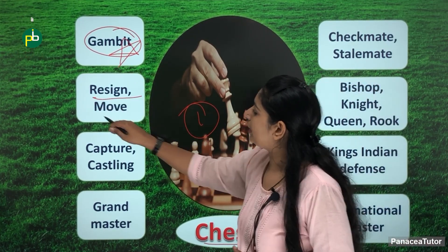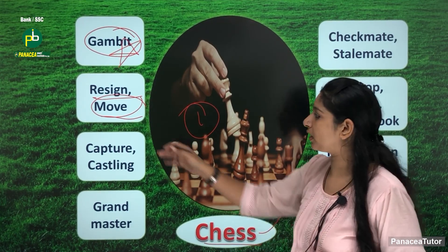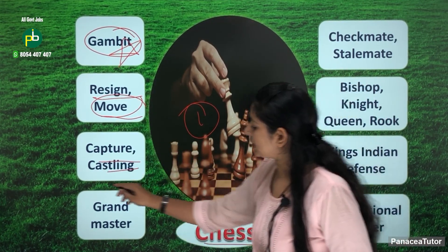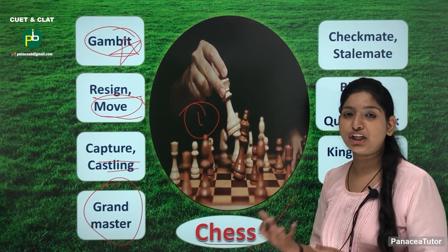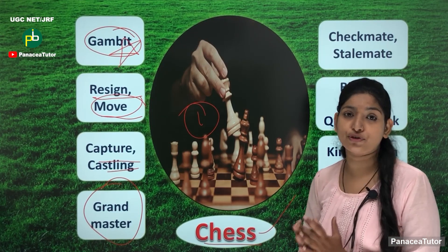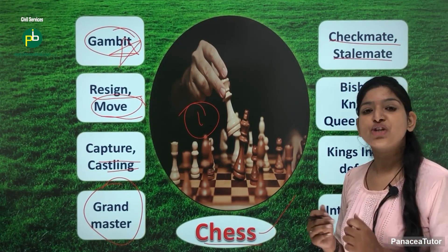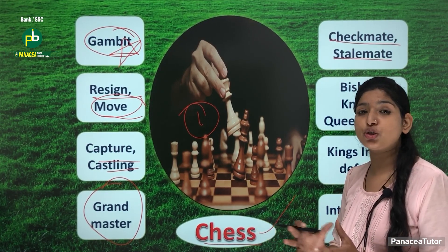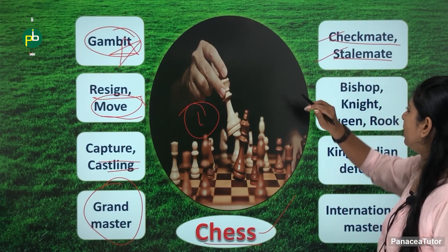Next is resign and move — move means when we move a piece on the board. Next is capture and castling. Next is grand master — grand master is a very important term; if any person is a chess winner, they can be given the title of grand master. Checkmate and stalemate — checkmate means the king is in check with no escape, a term we commonly use in chess games.